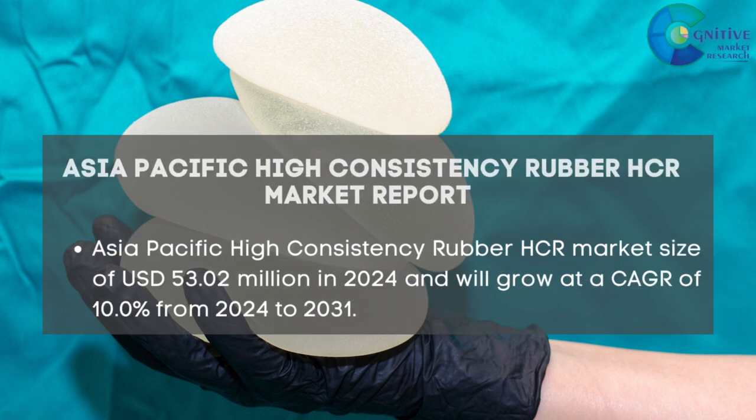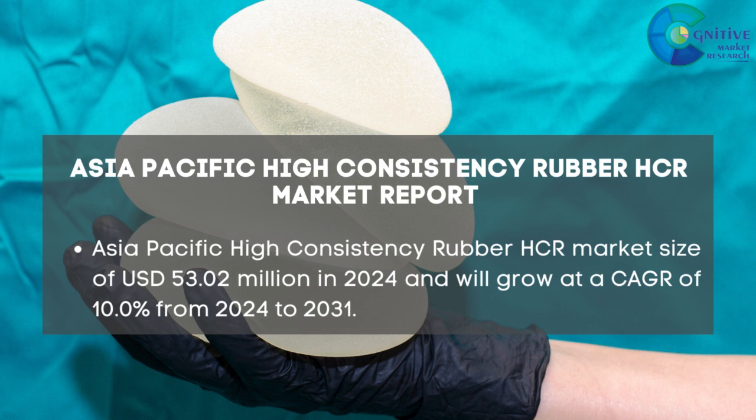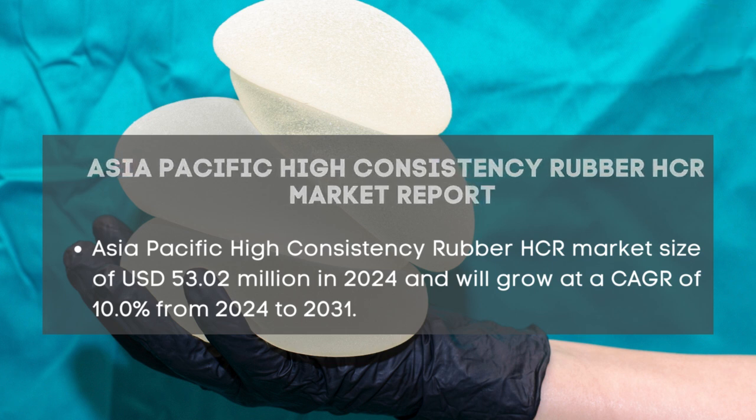Asia Pacific High Consistency Rubber HCR Market size of US$53.02 million in 2024, and will grow at a CAGR of 10% from 2024 to 2031.